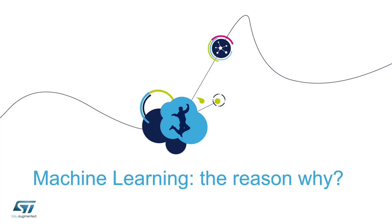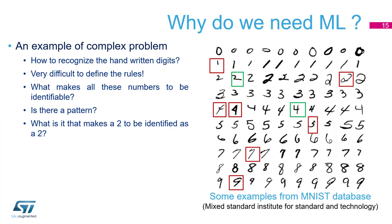Machine Learning — the reason why. This is the example: handwritten character recognition. This is one of the basic examples of the good approach for neural networks. It would be very difficult to develop the algorithm for that. The neural network approach is a very good solution in terms of development time and in terms of accuracy.